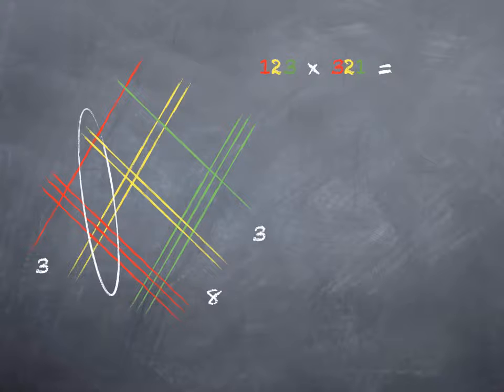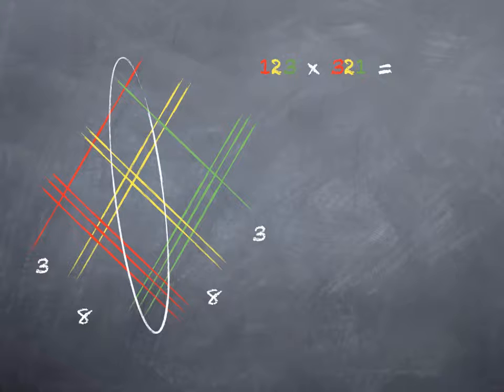Now I have red and yellow, so that's hundreds and tens, which is going to give me thousands. If you count them up, there are 8 of those. And in the middle, I either have red intersecting green, which is ones and hundreds, or I have yellow intersecting yellow, which is tens and tens. Either way, that's the hundreds place. And if you count them up, you wind up with 14 hundreds.